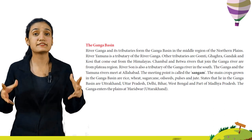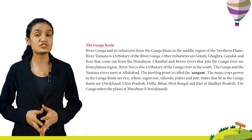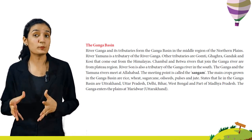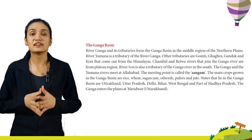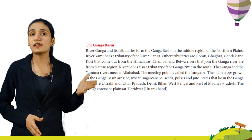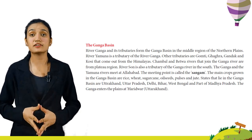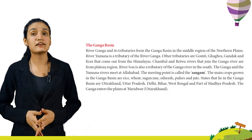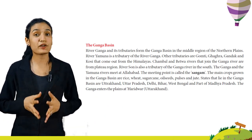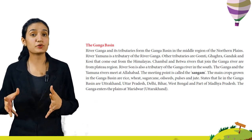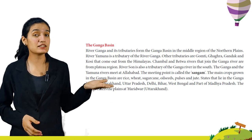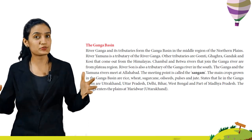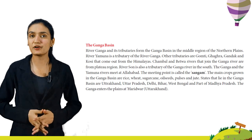River Ganga and its tributaries form the Ganga basin in the middle region of the Northern Plains. River Yamuna is a tributary of the river Ganga. Other tributaries are Gomti, Ghagra, Gandak and Kosi that come from the Himalayas. Chambal and Betwa rivers that join the Ganga are from the Plateau region. River Son is also a tributary of the Ganga in the south. The Ganga and Yamuna meet at Allahabad, and the meeting point is called the Sangam. The main crops grown in the Ganga basin are rice, wheat, sugarcane, oilseeds, pulses and jute. States in the Ganga basin are Uttarakhand, Uttar Pradesh, Bihar, West Bengal and part of Madhya Pradesh. The Ganga enters the plains at Haridwar, Uttarakhand.